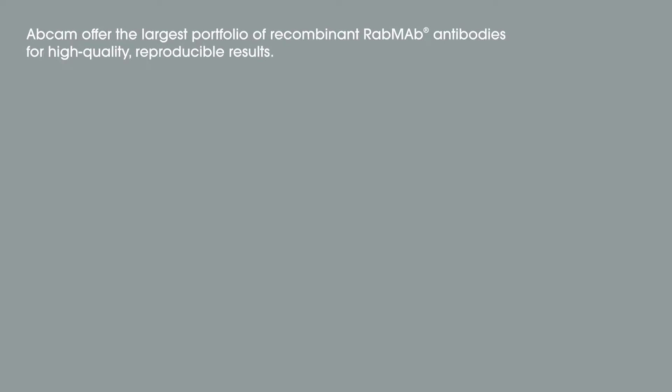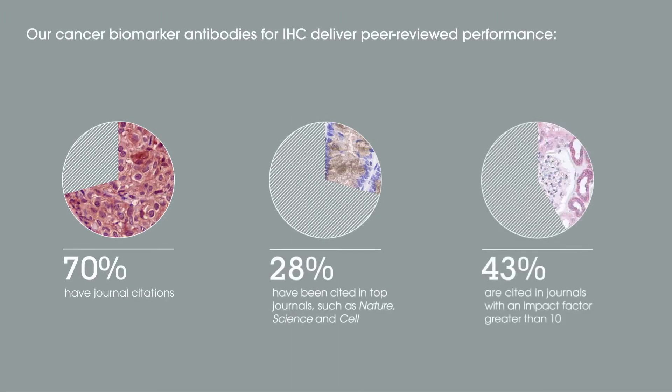Abcam offers the largest portfolio of recombinant RabMAb antibodies for high-quality, reproducible results. Our cancer biomarker antibodies for IHC deliver peer-reviewed performance: 70% have journal citations, 28% have been cited in top journals such as Nature, Science and Cell, and 43% are cited in journals with an impact factor greater than 10.